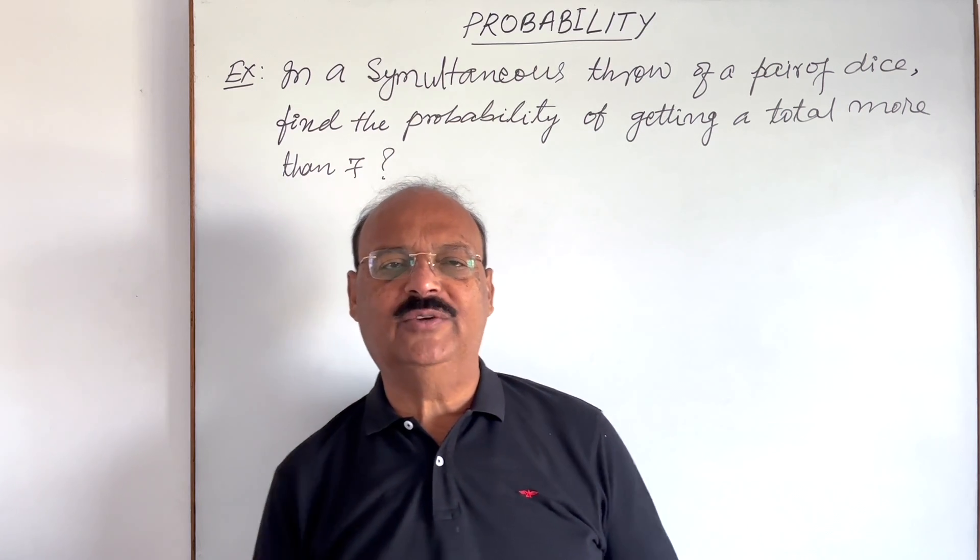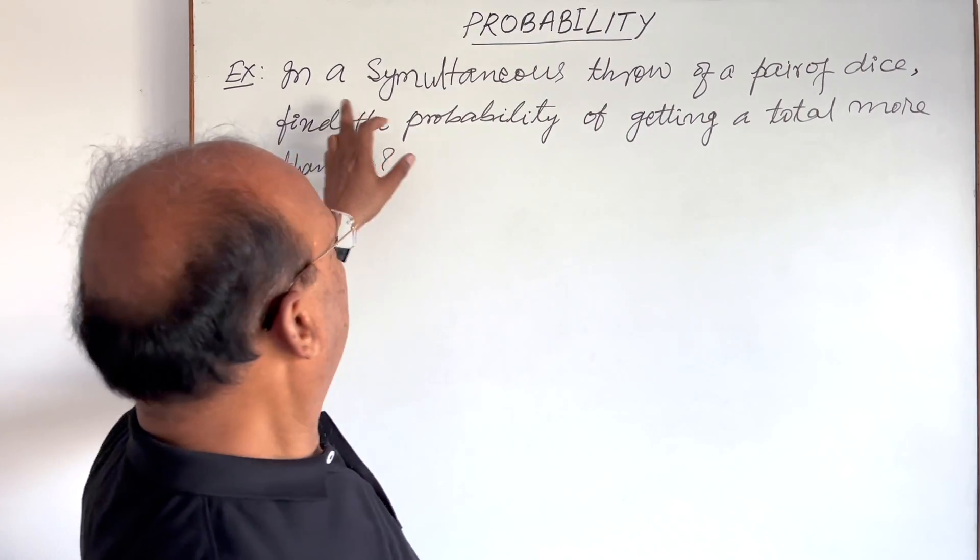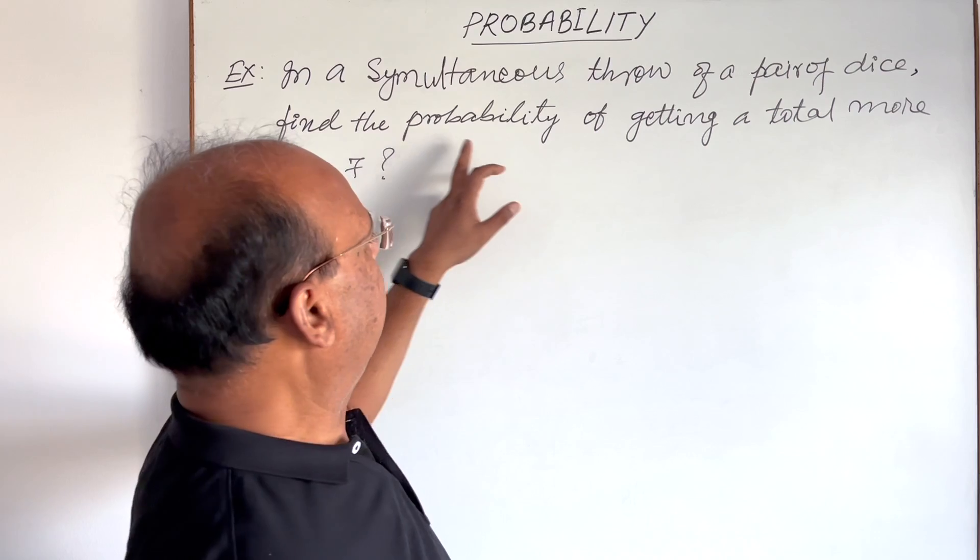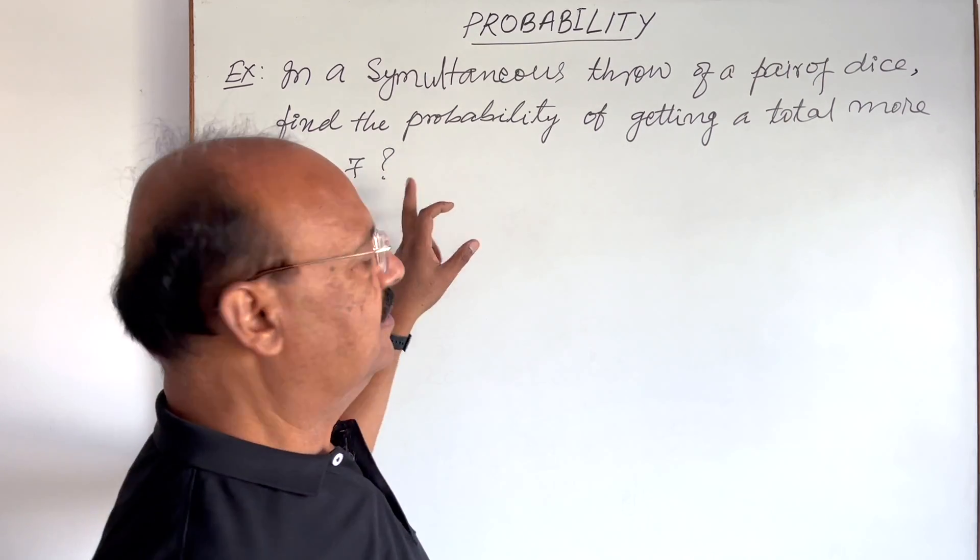Welcome students. Let us see a very interesting question from the topic probability. Here the question is: in a simultaneous throw of a pair of dice, find the probability of getting a total more than seven.